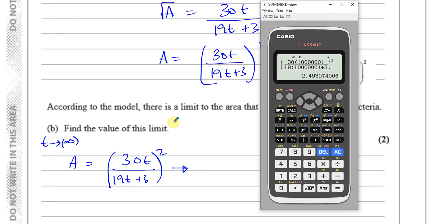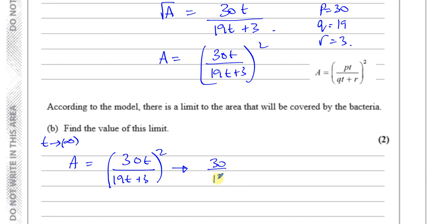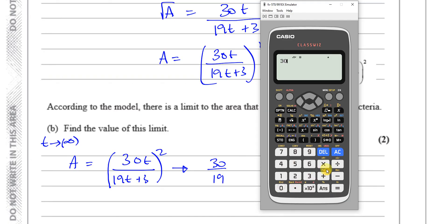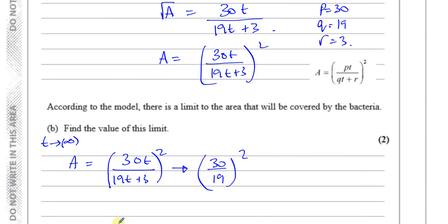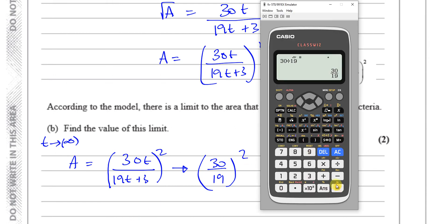That gives us 2.493. And that should give us basically 30/19 squared. Checking: 30 divided by 19, squared, gives 2.493. That's correct — same answer. So you put a value of T that's really large, and it confirms the limit.